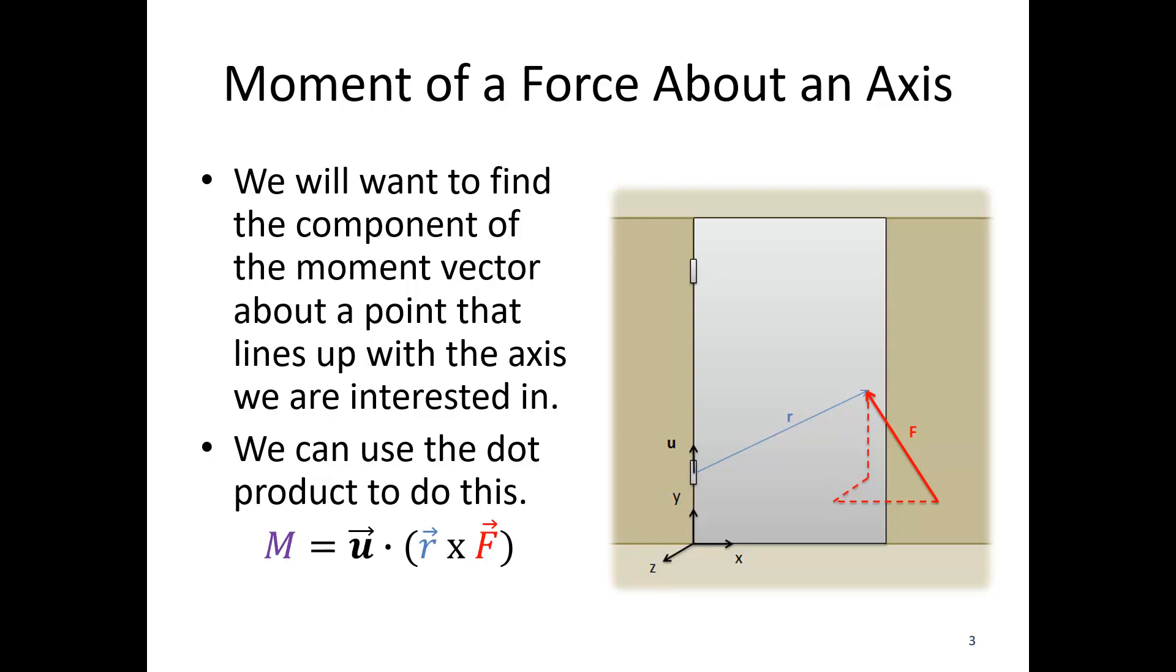Specifically we're going to use this formula. The moment about a specific axis will be u dot with the quantity r cross F.